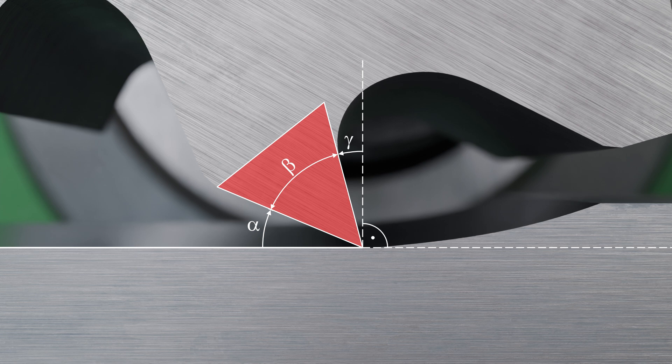Due to this strong deflection, the chips generally break off quickly, resulting in what are known as shear chips. However, because of the intense redirection of the material being removed and the relatively low separating forces caused by the large wedge angle, relatively high cutting forces are required.